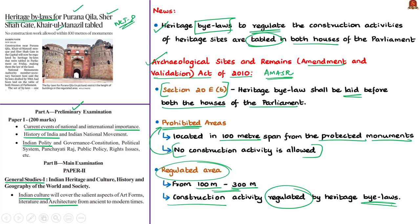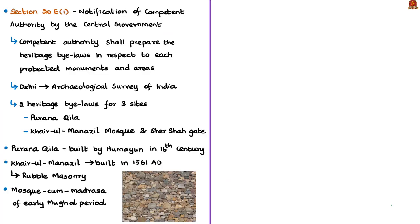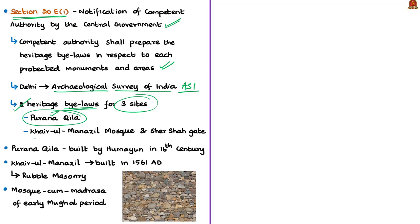The heritage bylaws have been drafted to regulate construction activities near protected monuments. As per Section 20E Clause 1 of the AMASR Act of 2010, a competent authority notified by the central government must prepare heritage bylaws for each protected monument and protected area. For Delhi, the competent authority is the Archaeological Survey of India. ASI has prepared two heritage bylaws for these three sites: one for Purana Kila and another for Kharul Manazil Mosque and Shersha Gate combined.